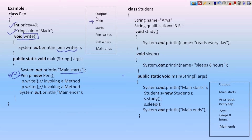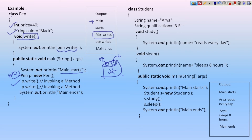The main function starts, then the first line executes. A new object will be created in heap memory with an object address, and the states and behaviors of that class are stored. Then p dot write — it goes to the object and checks whether the write method is present in that class. Yes, there is a write method. System dot out dot println 'pen writes' — it prints 'pen writes'. Again, p dot write is called a second time, printing 'pen writes' again.